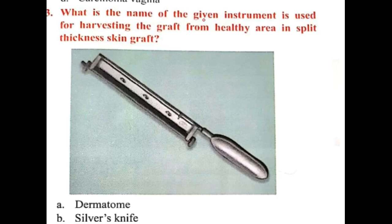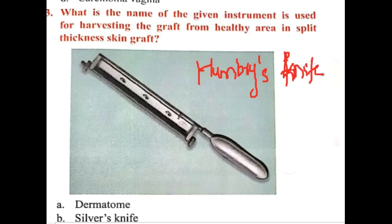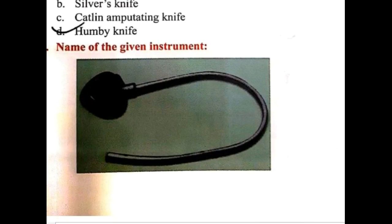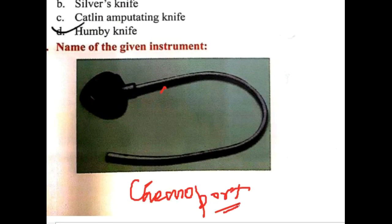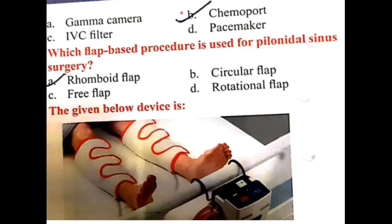What is the instrument used for harvesting the graft from healthy area in split thickness skin graft? This is Humby's knife, directly from Bailey and Love, used for harvesting in split thickness skin graft. The next instrument shown is a chemo port, which is used for administration of chemotherapy drugs.